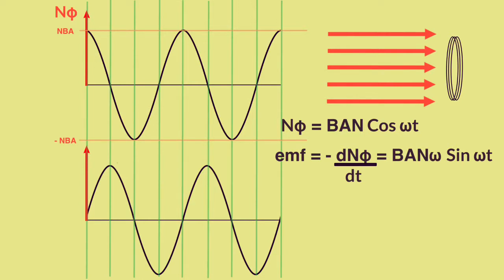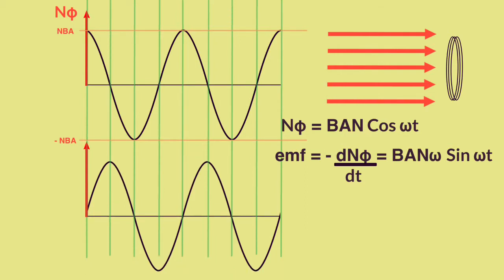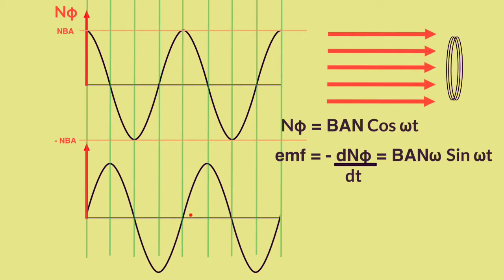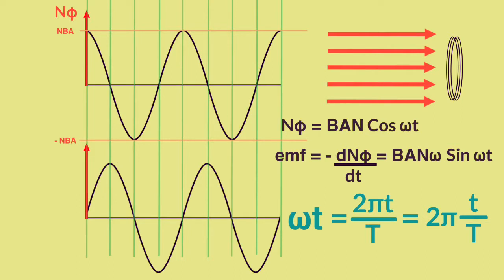You're thinking what's this ωt thing? Well if you imagine that this thing takes a certain amount of time to complete a cycle, it takes one period to complete a cycle, so one period is big T. You can write omega as 2π over the period, that's one complete cycle over one complete period. Then ωt is going to be 2πt over T.